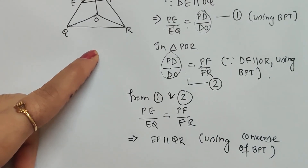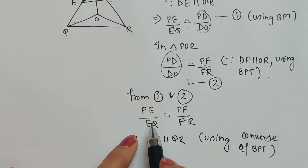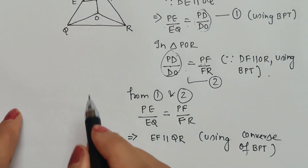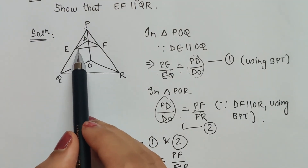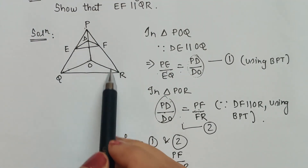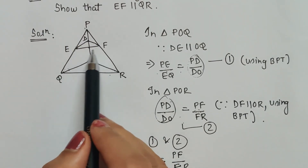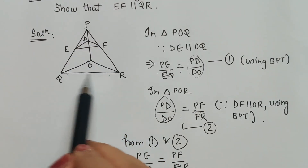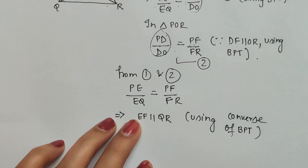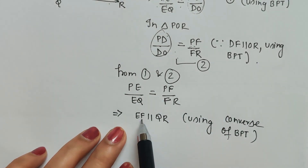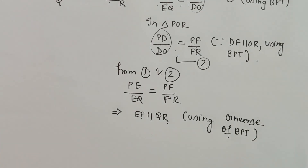By the converse of basic proportionality theorem, in a triangle, if a line divides the two sides in the same ratio, then the line is parallel to the third side. That is exactly what we have shown: EF is parallel to QR. Thank you.